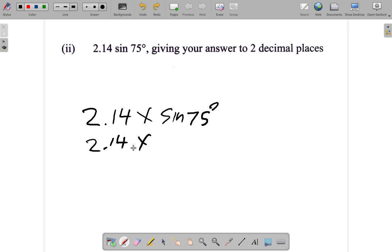While you're working, don't use two decimal places. Use at least three. I'm going to be using four decimal places: 0.9659.